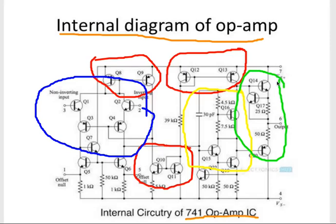Good morning, welcome back to my channel. In this video we will see the internal diagram of the op-amp. This is your input level, this is your differential amplifier — Q1, Q2, Q3, Q4 — and these red color blocks are the current mirrors.